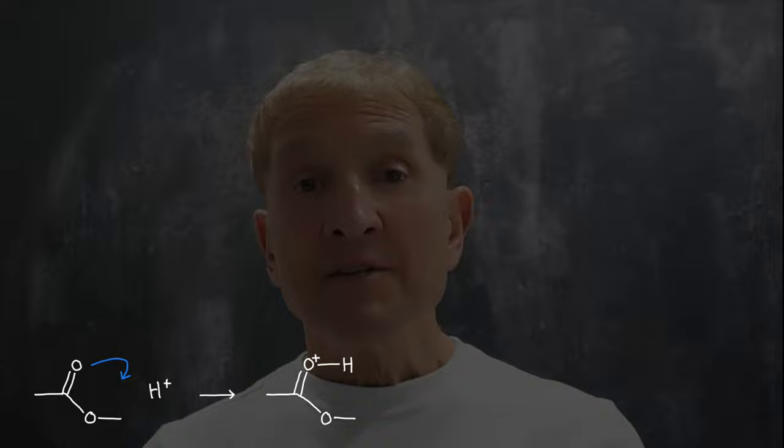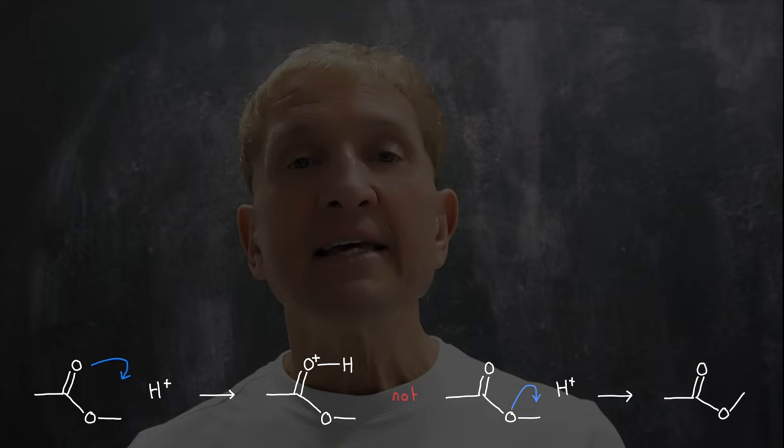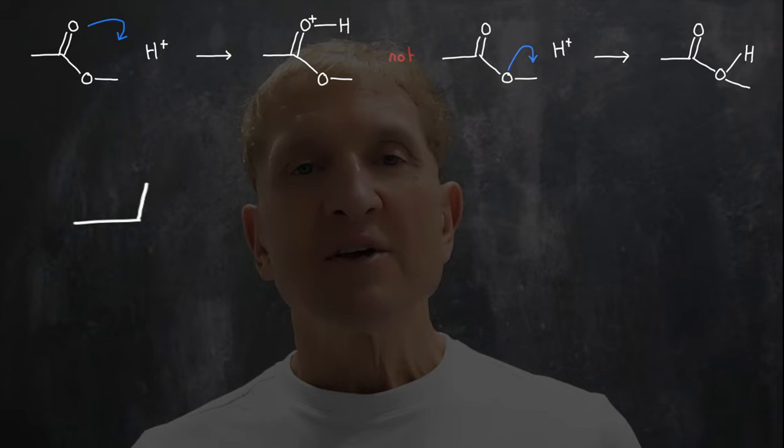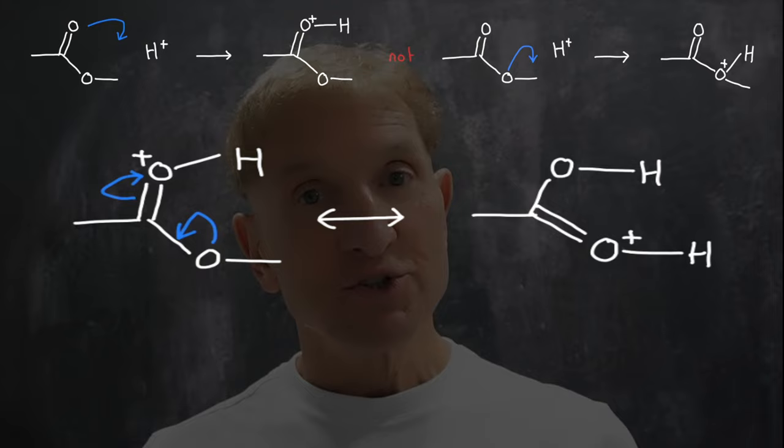Why do esters protonate on the oxygen which bears the double bond, and not on the oxygen bearing the alkyl group? If I present a proton to, say, methyl acetate here, I know the best way to draw that protonation is by putting the proton onto the C double bond O oxygen. Acetate protonates on the carbonyl oxygen because when it does that, we can delocalize the lone pair of electrons on the other oxygen into the positive charge.